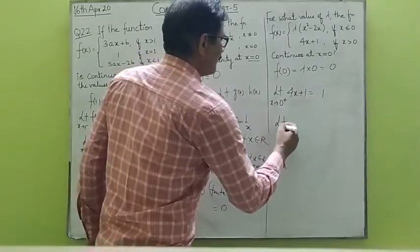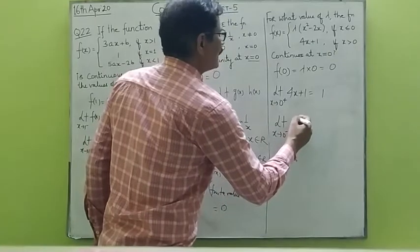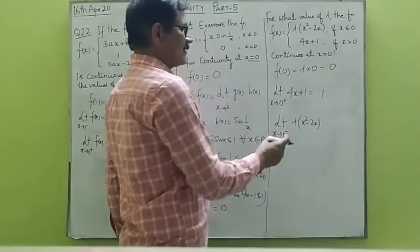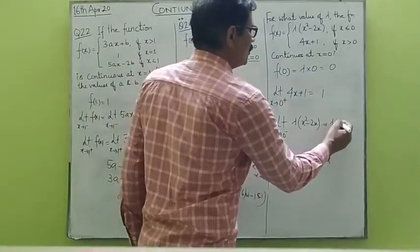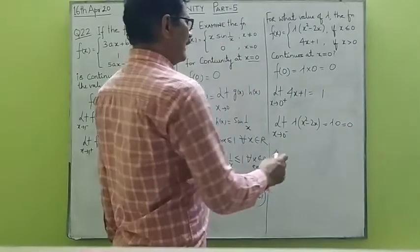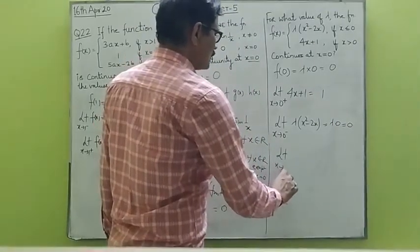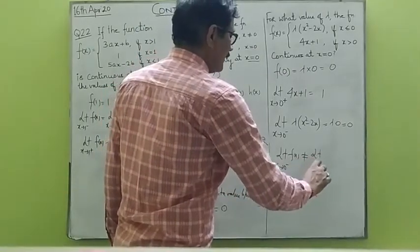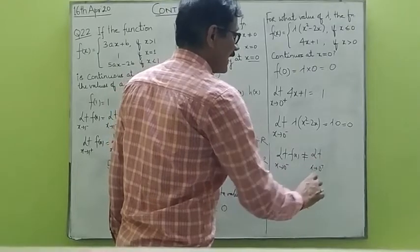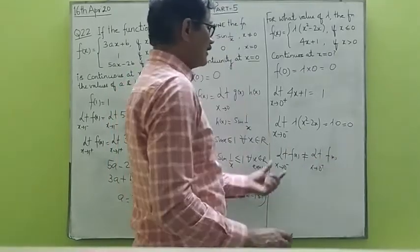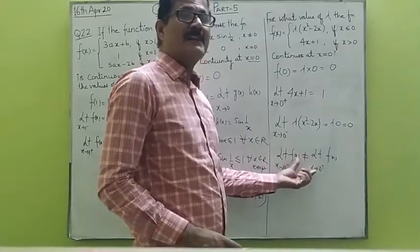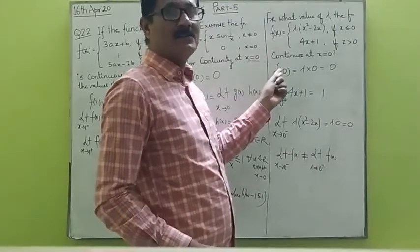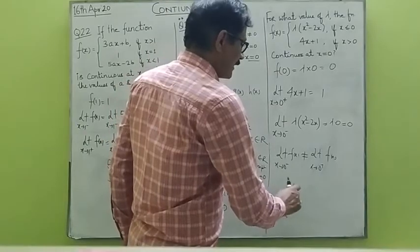Now finding the left hand limit as x tends to 0 negative: that is given by lambda times x squared minus 2x, and substituting x as 0 gives lambda times 0, which is 0. We find that the left hand limit equals 0 but the right hand limit equals 1 — they are not equal. So the function has a non-removable discontinuity; it is discontinuous. For any value of lambda the function will not be continuous at x equals to 0.